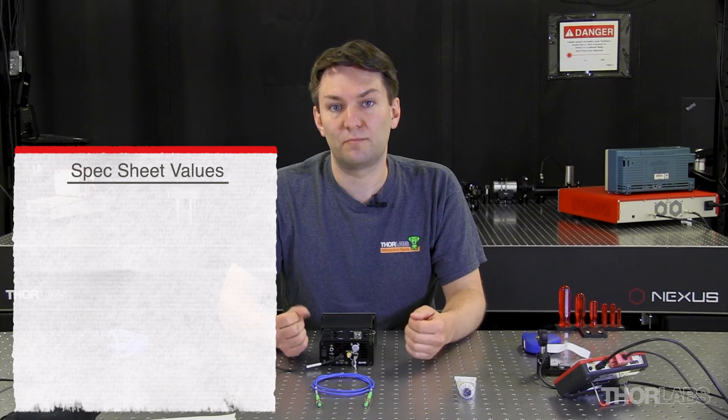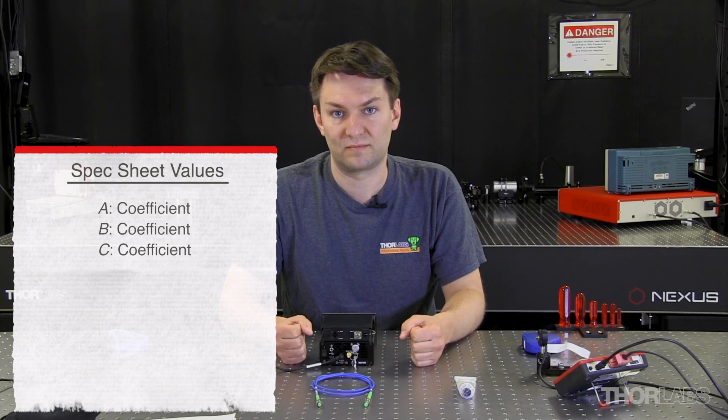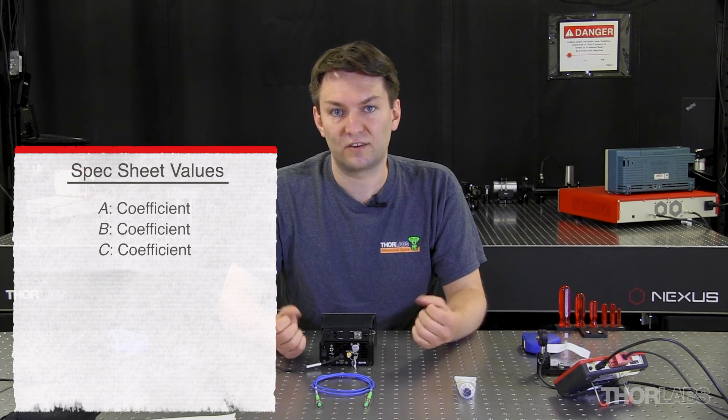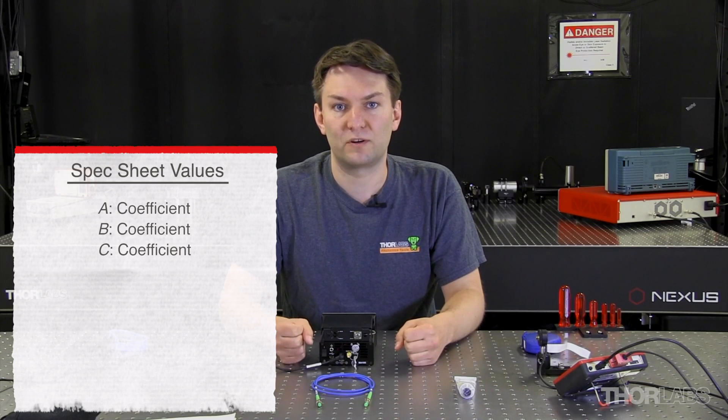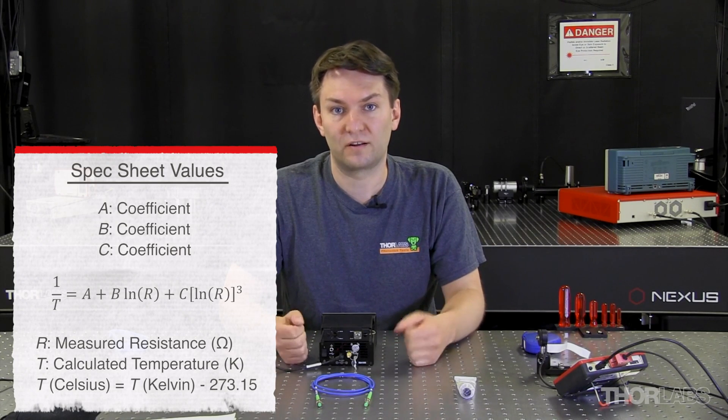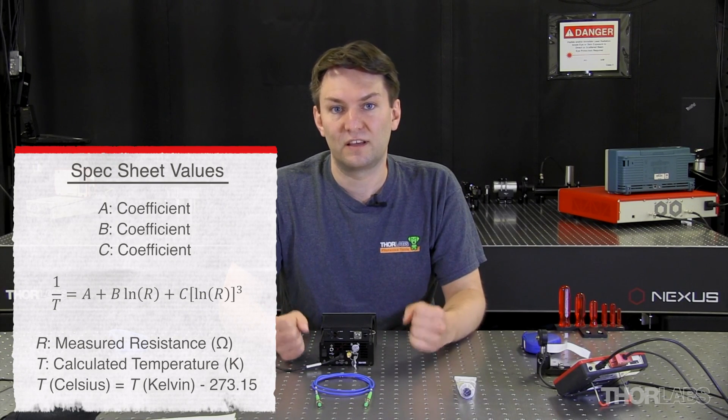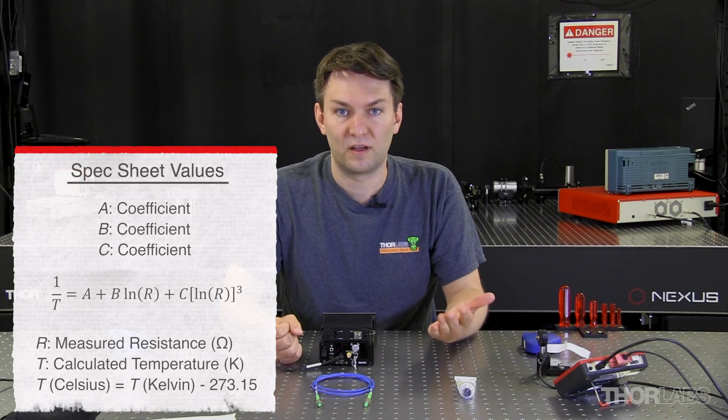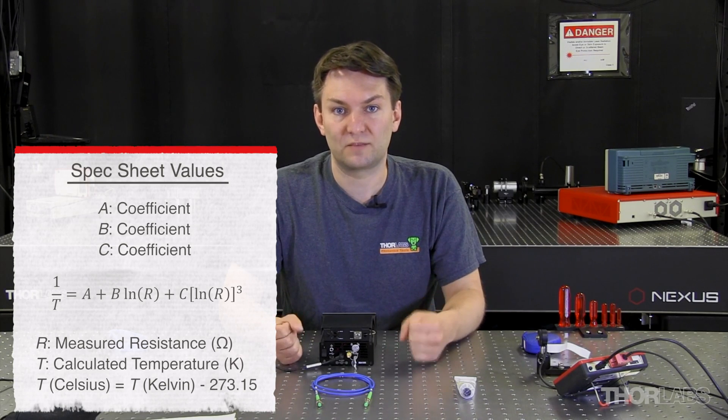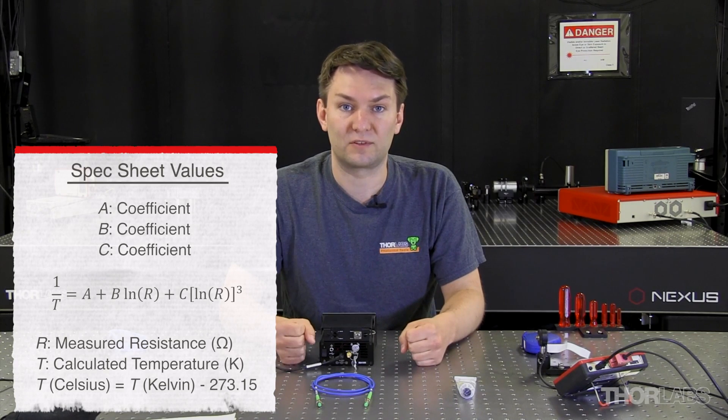A second way is to measure the resistance and temperature at three locations. In this case, your spec sheet will have three or four parameters that correspond to the Steinhardt-Hart equation. So in this case, you can put in your Steinhardt-Hart coefficients into the equation with the resistance that was measured and calculate what the temperature of the thermistor is.